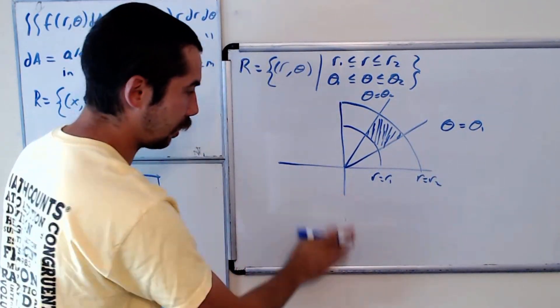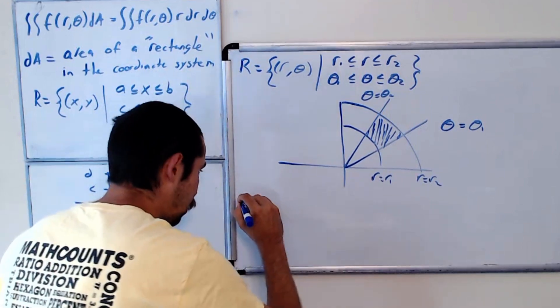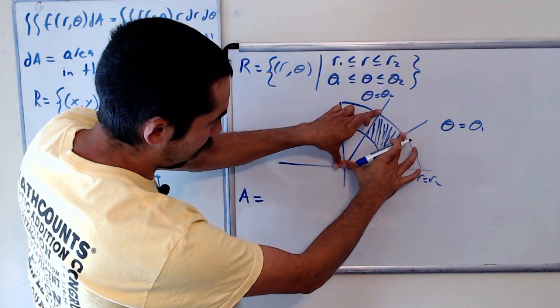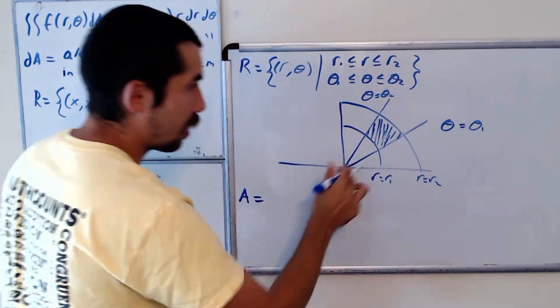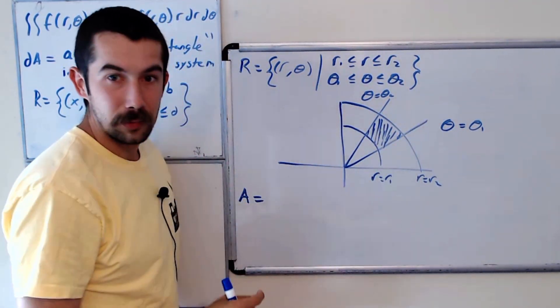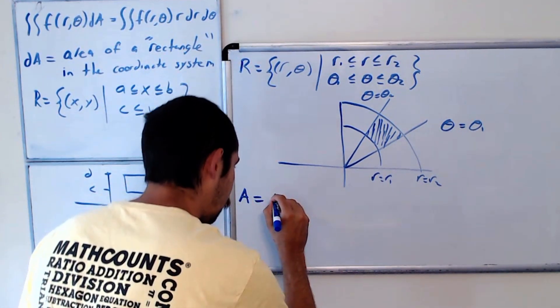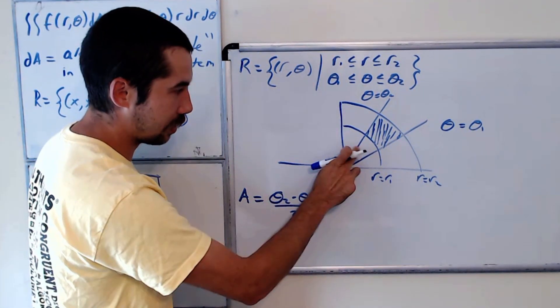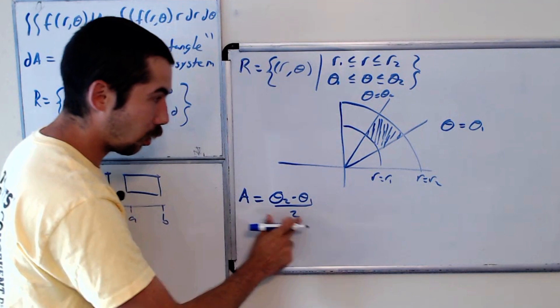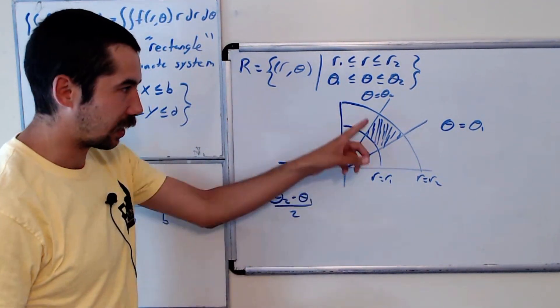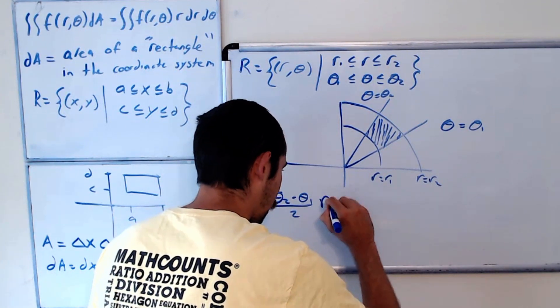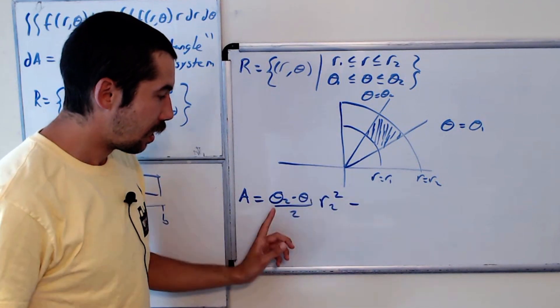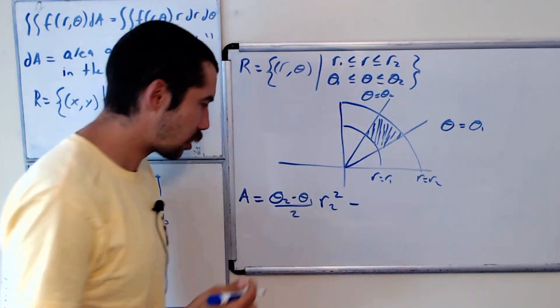And so what is its area? Its area A is equal to, well, what is the area of this slice here? That's the difference in theta over 2 times r2 squared. So (theta2 minus theta1) over 2 - so that's this angle here, because that's just the formula for finding a sector of a circle - times r2 squared, minus similar argument, (theta2 minus theta1) over 2 times r1 squared.